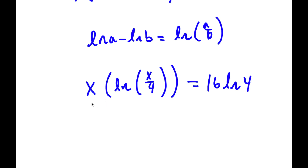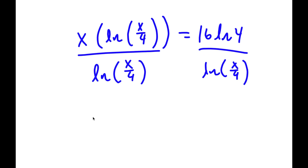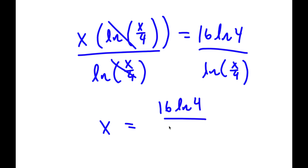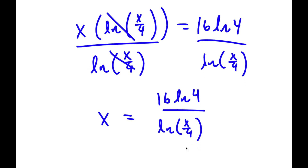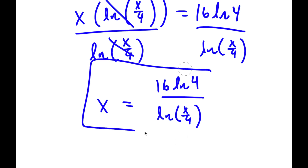Now if I divide both sides by ln of x over 4, these two cancel out and x is equal to 16 times ln 4 over ln of x over 4. So this is my answer.